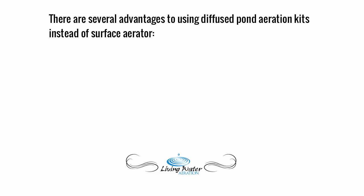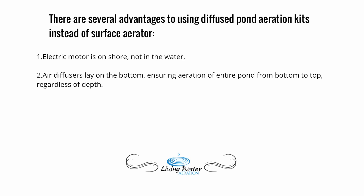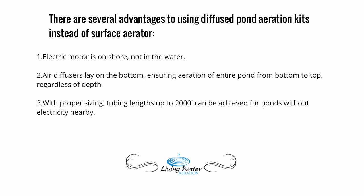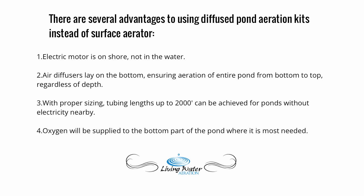There are several advantages to using diffused pond aeration kits instead of surface aerators. First, the electric motor is on shore, not in the water. Second, the air diffusers lay on the bottom, ensuring aeration of the entire pond from bottom to top regardless of depth. Third, with proper sizing, tubing lengths up to 2,000 feet can be achieved for ponds without electricity nearby. Oxygen will be supplied to the bottom part of the pond where it is most needed.